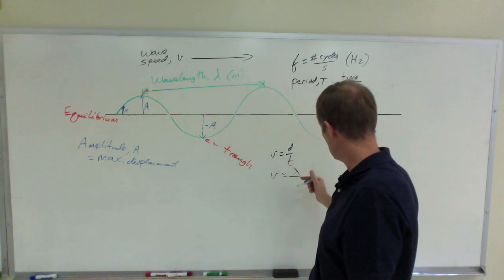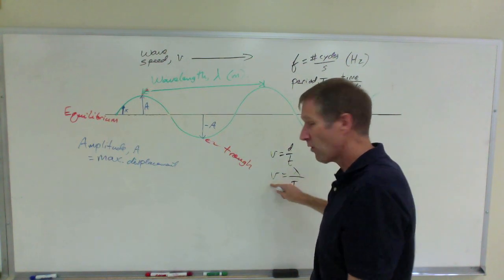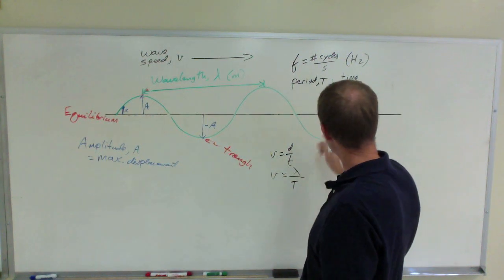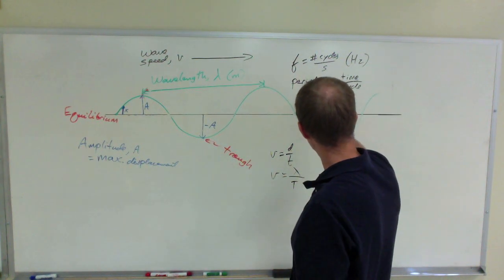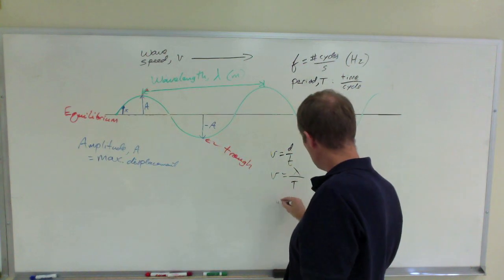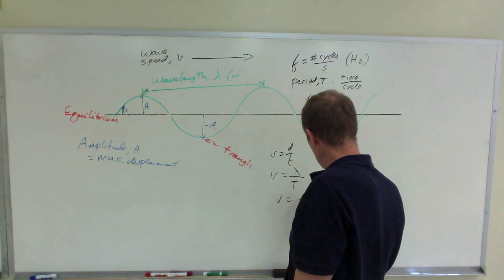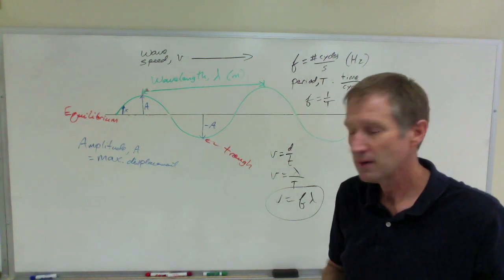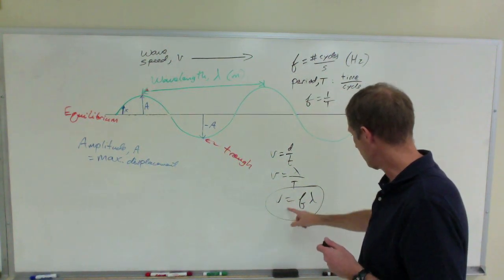That's the period. So the speed of a wave is wavelength over period. But remember that frequency is reciprocal of period. Therefore, v also equals f lambda. That's a very useful equation. V equals f lambda.